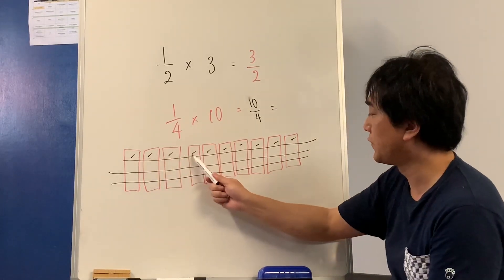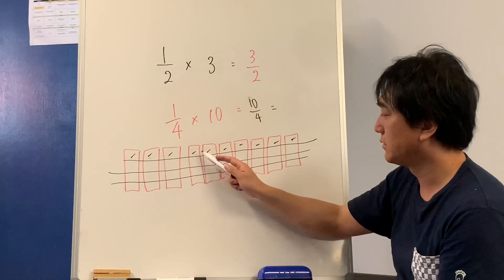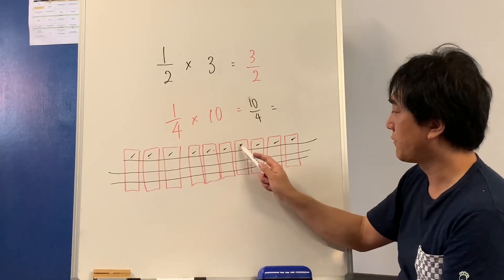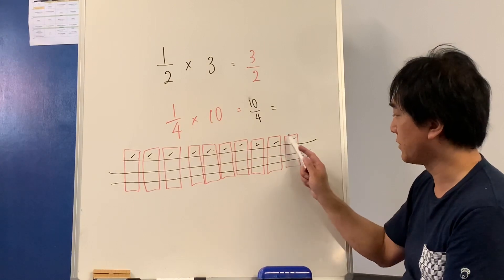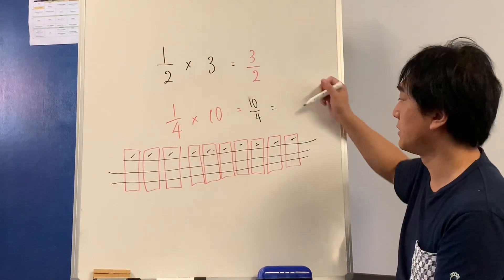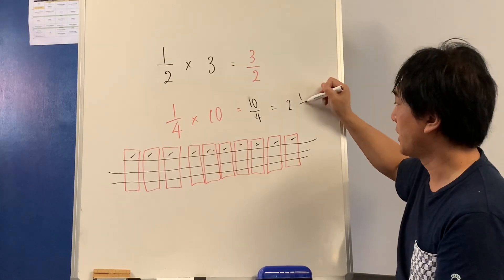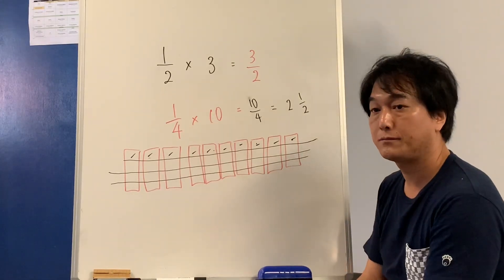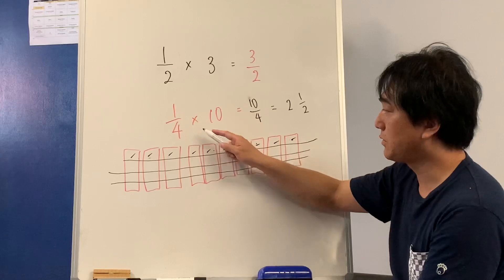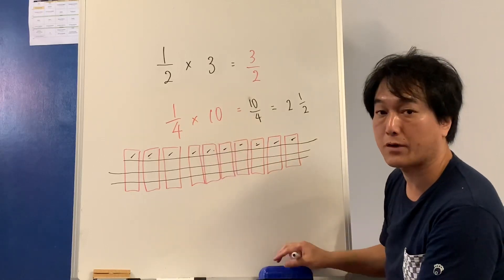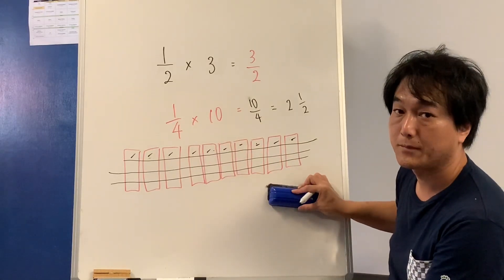4 little quarters will make 1 whole chocolate bar. 2 lots of those will make half a chocolate bar. I have 2 whole chocolate bars and 1 half. The point is: you can multiply fractions with a whole number.